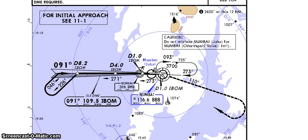This is a standard hold. Inbound of the hold is 273. Set your course cursor to the inbound. Outbound of the hold is 090. Minimum holding altitude is 3700 feet. This is where you decide your entry — this shall be a parallel entry.